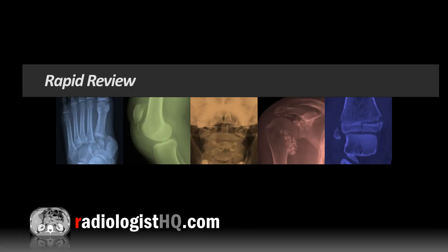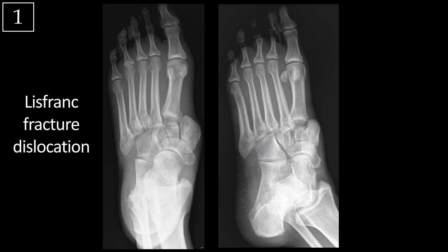Now for rapid review. The Lisfranc fracture dislocation occurs at the tarsal-metatarsal articulation. The first three metatarsals articulate with the first three cuneiforms, and the fourth and fifth metatarsals articulate with the cuboid. Homolateral means lateral displacement of all metatarsals. Divergent means lateral displacement of the second through fifth metatarsals with medial displacement of the first metatarsal.